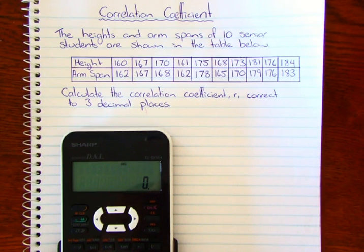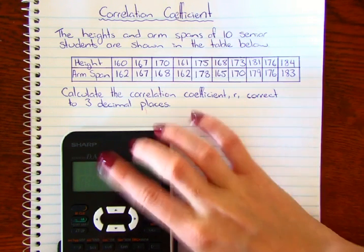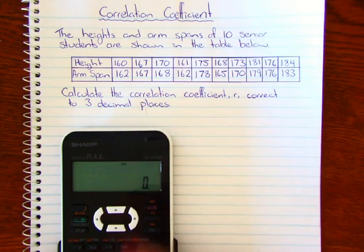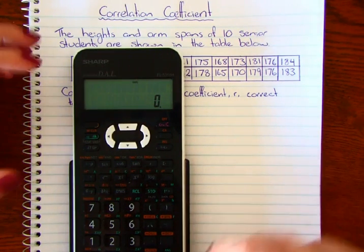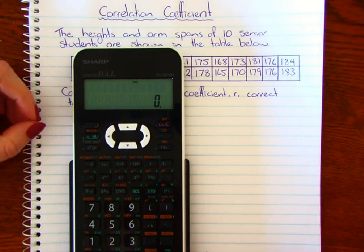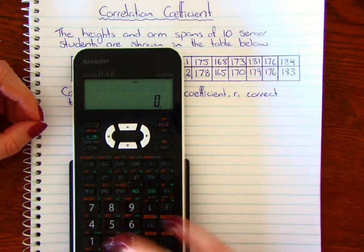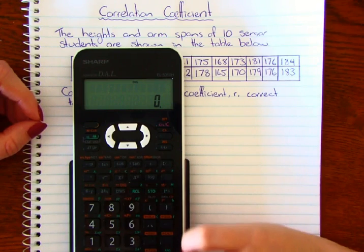In this video, I want to have a look at finding the correlation coefficient using your Sharp calculator. Your calculator might look a little bit different if you've got the newer version, but the settings are all the same, the modes and all the buttons are in the same place as well. Mine are a little bit worn off too, but I'll just tell you what they are.